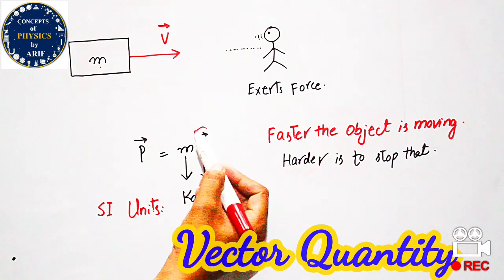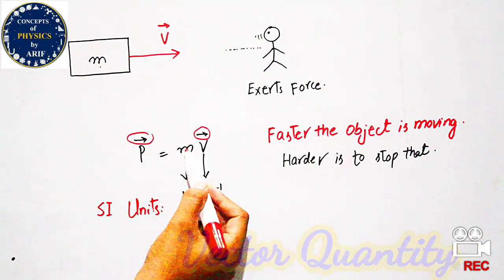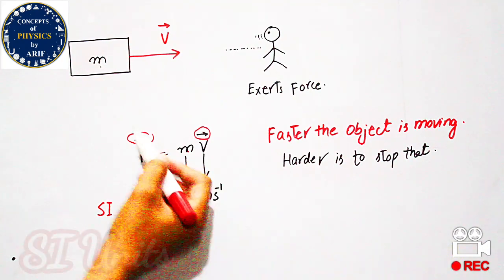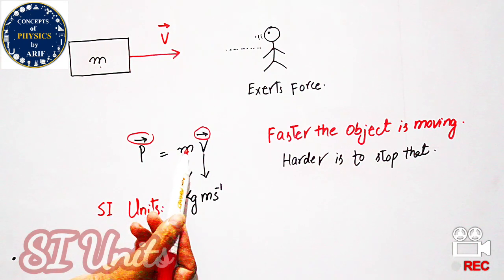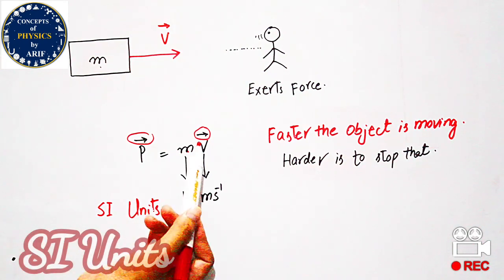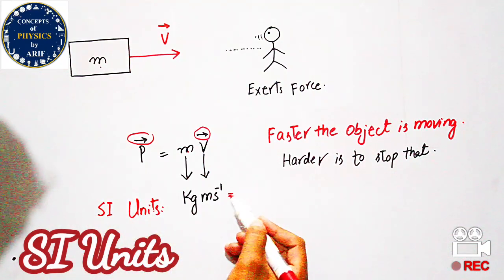As you can see in the arrowhead, because velocity is a vector quantity, the product of a scalar quantity and vector quantity becomes a vector quantity. Its units can be seen as the unit of mass is kg (kilogram) and unit of velocity is meter per second.